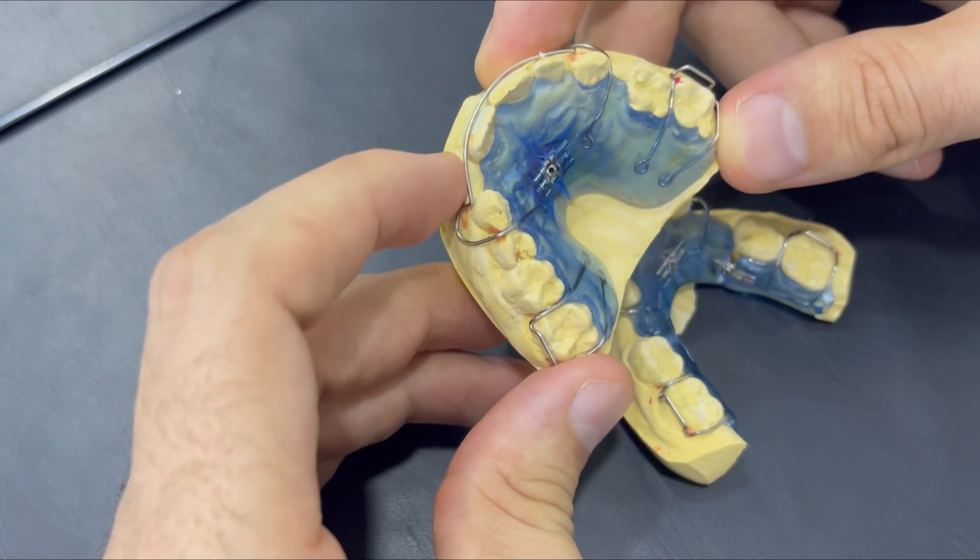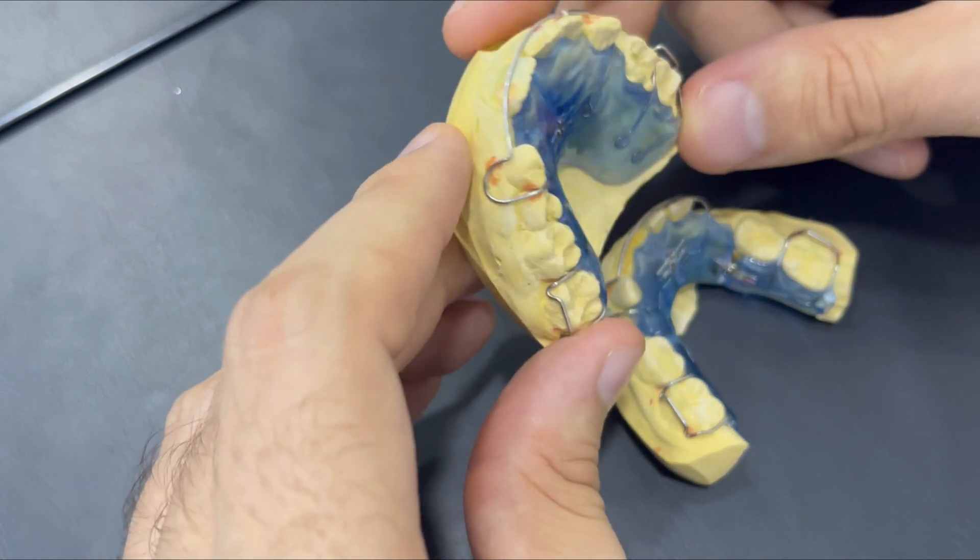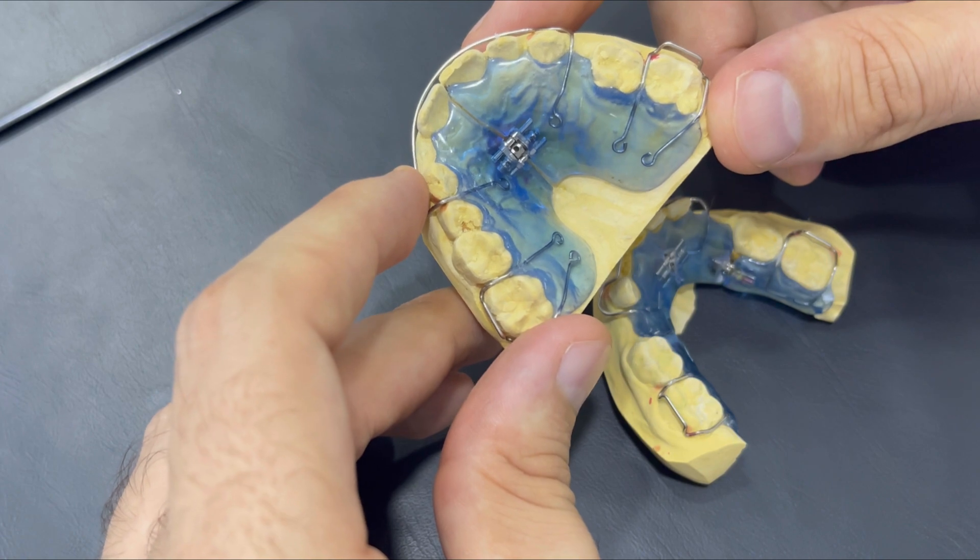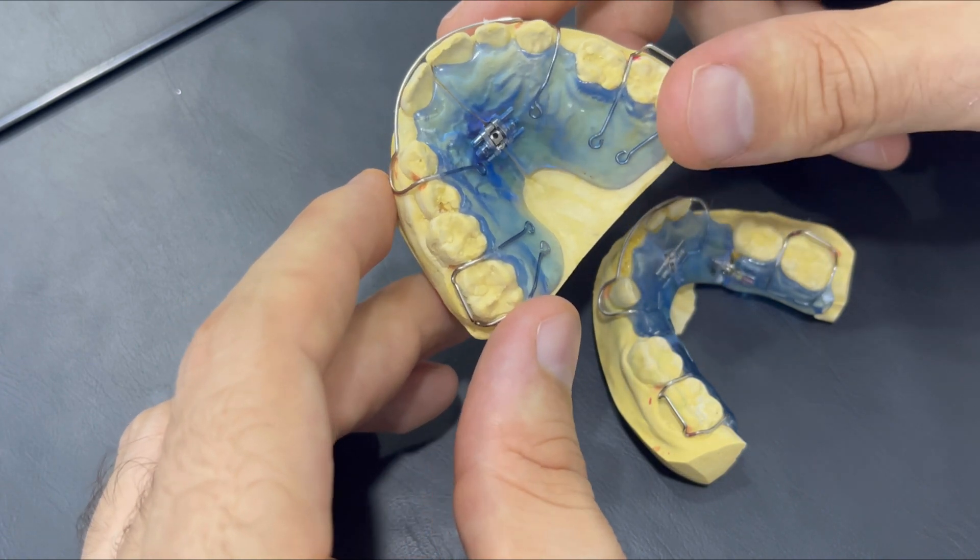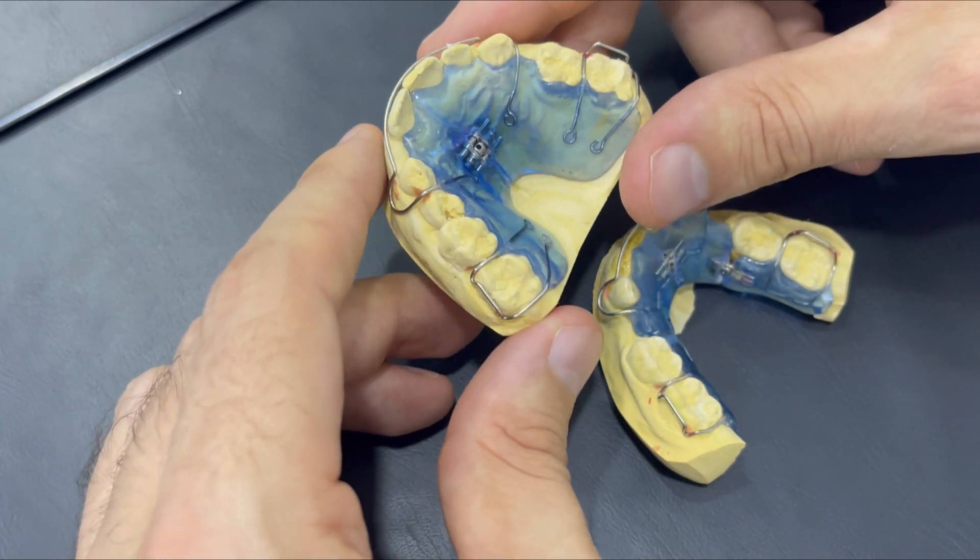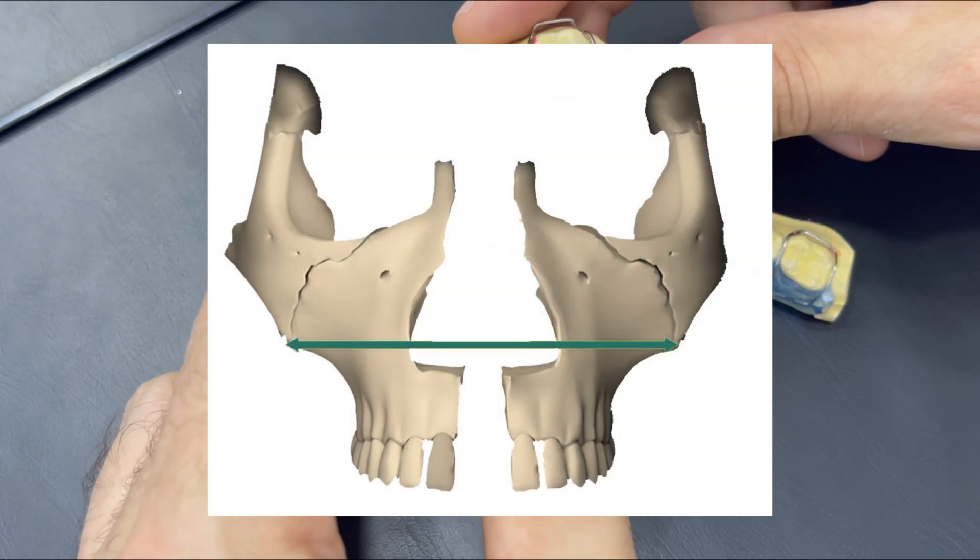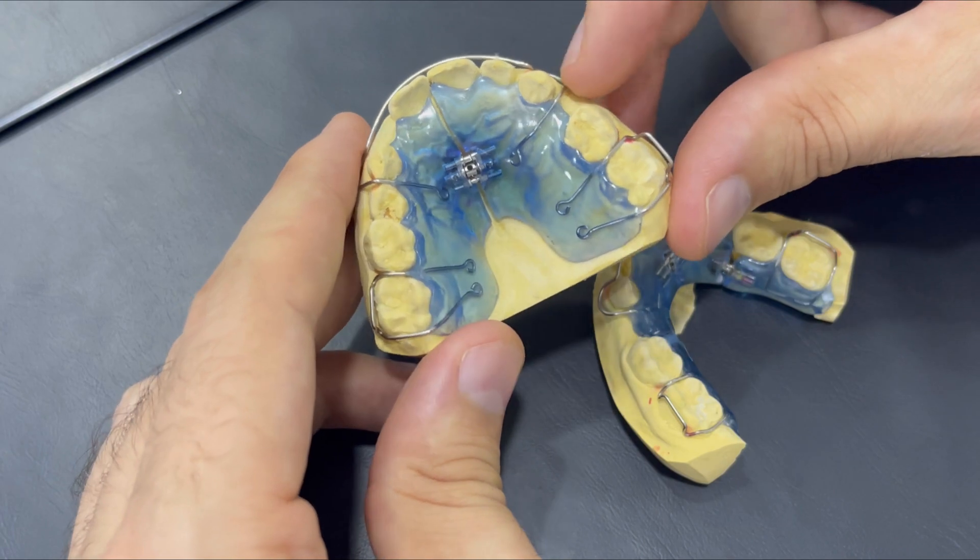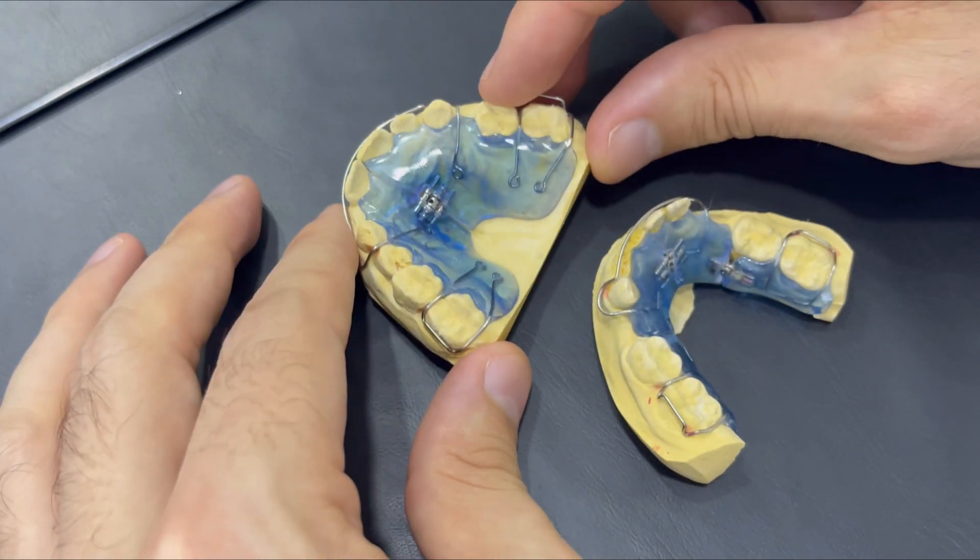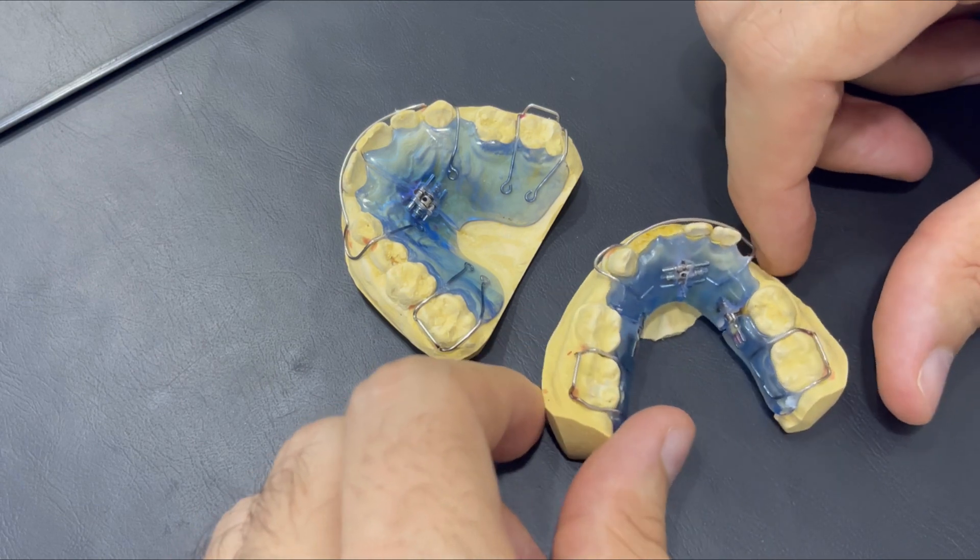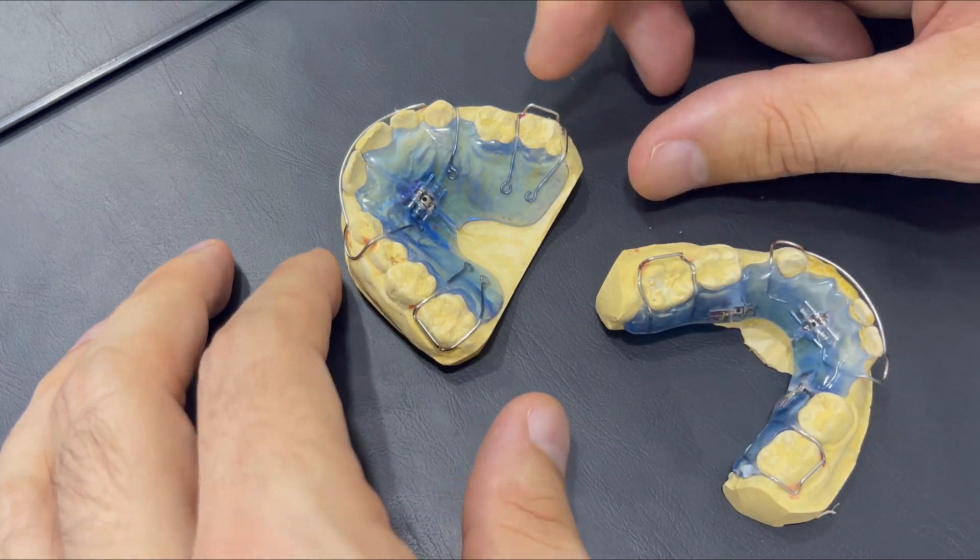The difference between fixed appliances and removable ones is the dental expansion or the skeletal expansion. Skeletal expansion means expanding the bone itself, in comparison with removable one which is expanding only the teeth. In other words, inclining the teeth outward.